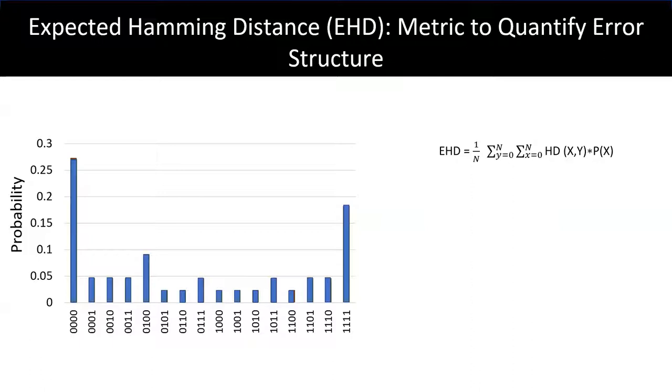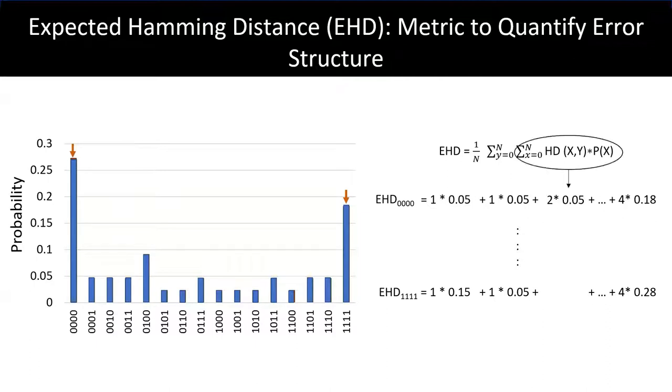So now that we know that there exists a structure in Hamming space, we need a metric to quantify it. And we can use it to understand how the structure changes for different benchmarks and different quantum platforms. To that end, we compute the expected value of Hamming spectrum by computing a weighted sum pairwise distance between all pair of output strings and use the probabilities as the weighing parameter. For example, we can calculate EHD of all zero strings by adding the weighted pairwise distance between all zero strings and all other output strings. Similarly, we can compute EHD for all other outcomes in the output distribution and in fact compute expected Hamming distance or EHD for entire output distribution.